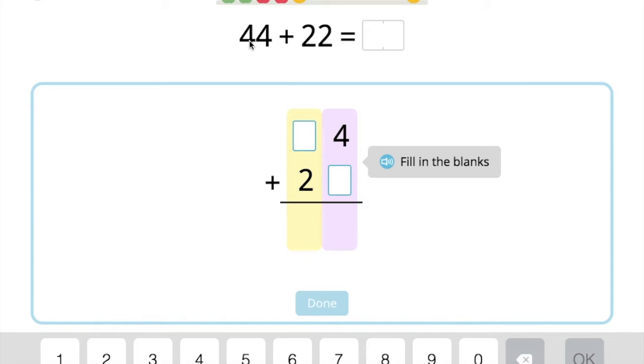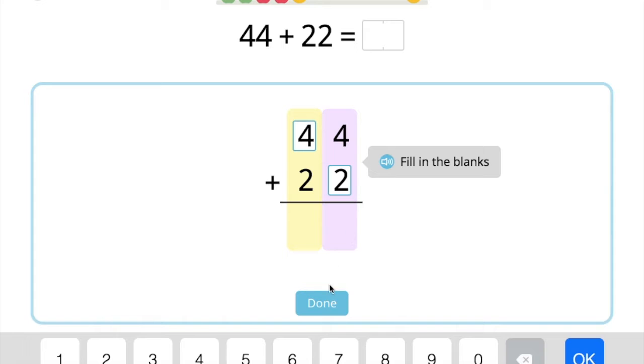Okay, so this says 44 plus 22. Uh oh, this has got some blanks so I'm gonna fill in these blanks. 44, so I'm gonna put a 4 here. Here we go. And a 2 here. Looks the same. All right, press done.